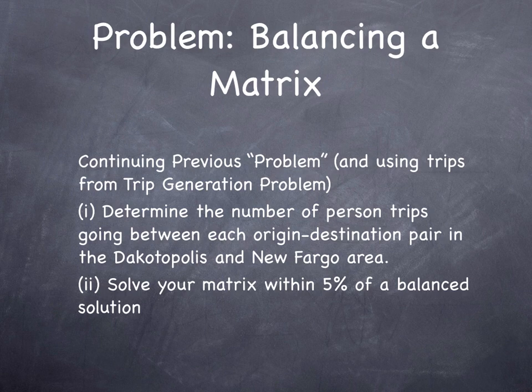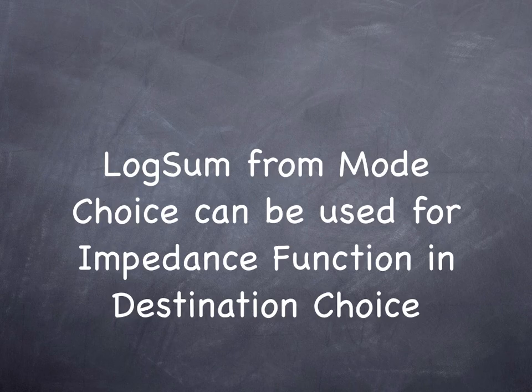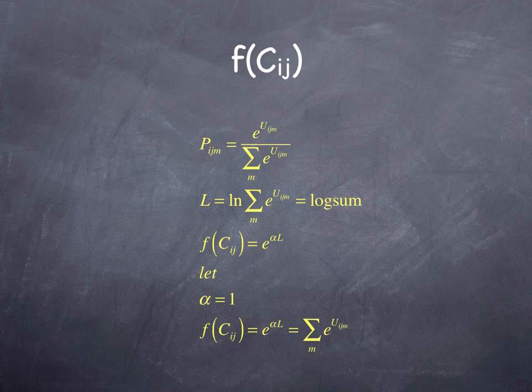I'm going to go through an example. So the question is, continuing the problem that we did for trip generation, determine the number of person trips going between each origin-destination pair in Decodopolis and New Fargo, and solve your matrix within 1% of a balanced matrix. Recall from our impedance discussion, we said the log sum from mode choice can be used as the impedance function in destination choice.